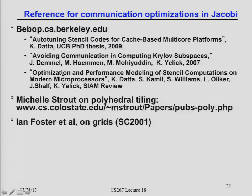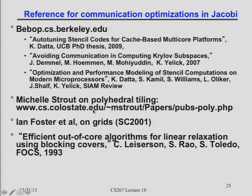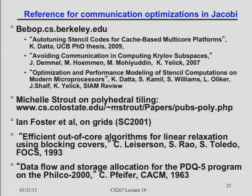Jacobi doesn't converge fast enough — that'll be the next topic. In real applications with structured grids you may have dozens or hundreds of arrays and an enormous number of floating-point operations on each one; it's not just averaging with nearest neighbors. That's why people are motivated to automate this and put it in compilers. This work has been done on grids of geographically distributed computers. The oldest reference dates to 1963, when core-and-drum was the communication technology — but communication has always been important to optimize.